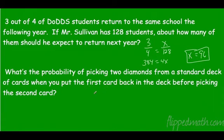What's the probability of picking two diamonds from a standard deck of cards when you put the first card back in the deck? Well, how many diamonds are there? There's 13 out of 52. Now in this case we put that card back, so there are still 13 diamonds out of 52. If we had not put that card back, this would have been 12 out of 51, right? So that multiplies out to 1 over 16 or 0.0625, 6.25 percent chance. Not very good.